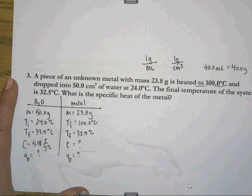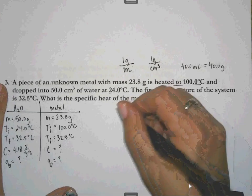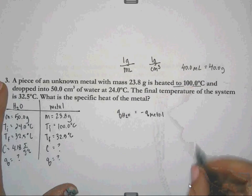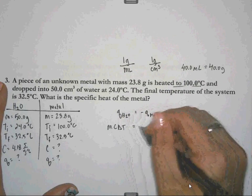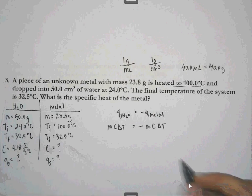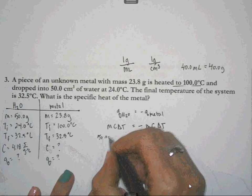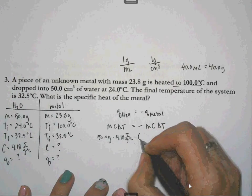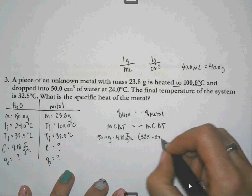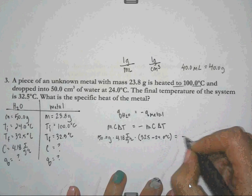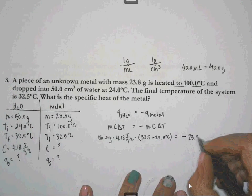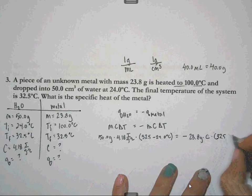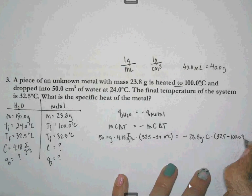Well, I'm only missing one piece. I can find my Q. So yet again, I'm going off the same idea as before that the Q of the water is equal to the negative Q of the metal. And again, that's MC delta T is equal to negative MC delta T. So my mass is 50 grams. My specific heat is 4.18 joules per gram degree Celsius. My temperature change is 32.5 minus 24 degrees Celsius. That's equal to negative 23.8 grams times the C I want to find times 32.5 minus 100 degrees Celsius.